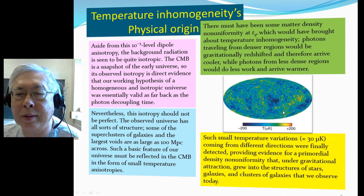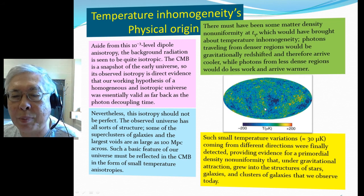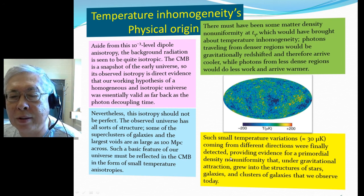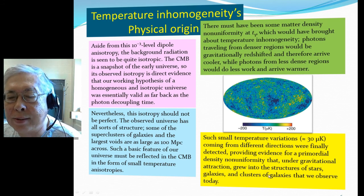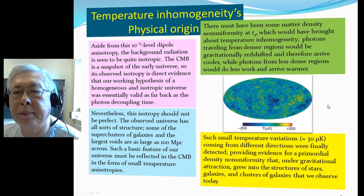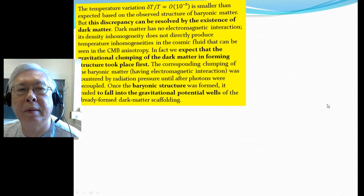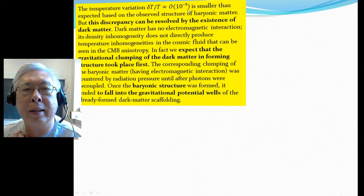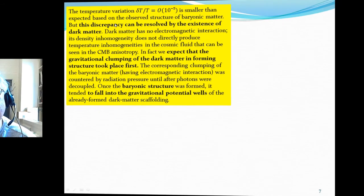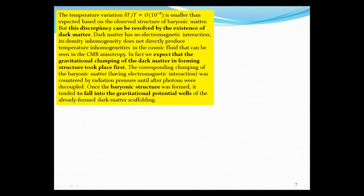This is a picture of the cosmic background with slightly different temperatures. Such small temperature variations — about 30 microkelvin — coming from different directions were finally detected, and provide evidence for primordial density non-uniformity that, under gravitational attraction, grew into the structure of stars, galaxies, and clusters of galaxies that we observe today. This temperature variation of one part in 100,000 is smaller than expected based on the observed structure of baryonic matter, but this discrepancy can be resolved by the existence of dark matter.